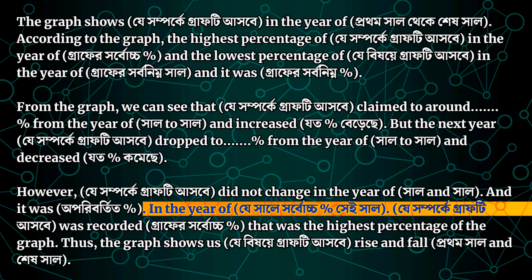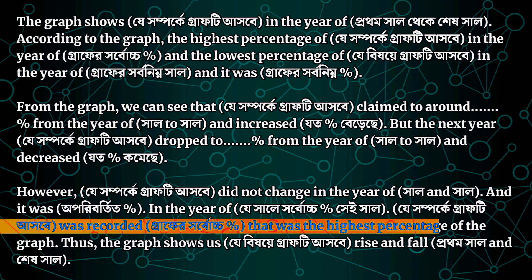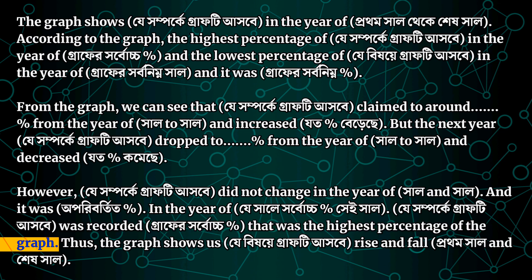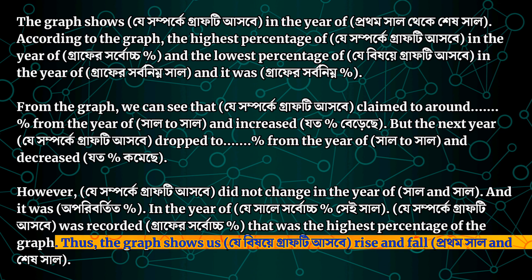In this year, it will not be 100%. That was the highest percentage of the graph. Now we have 10% in this year. When the graph shows the highest percentage, we describe it using rise and fall. Now we need to change to the top of the graph.